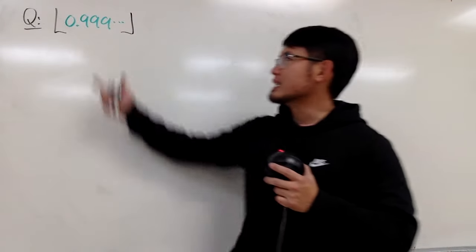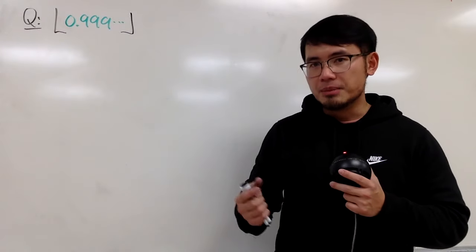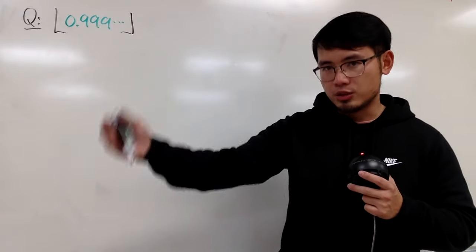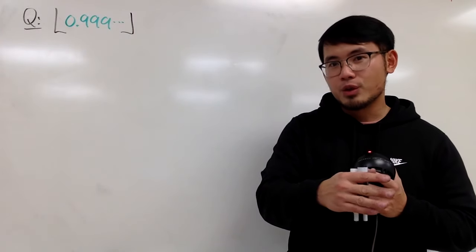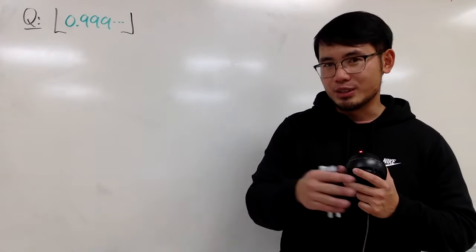First of all, we have to know that this right here represents a limit, the limit of the sequence starting 0.9, and then 0.99, and then 0.999, and so on. We need to find out the limit of that sequence first.